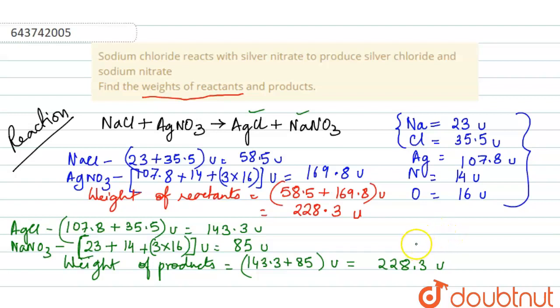So weight of reactants equals to the weight of products, which is equal to 228.3 atomic mass unit. So this is your complete answer.